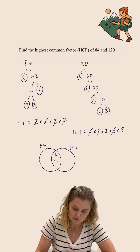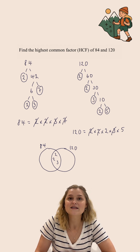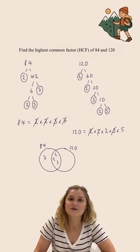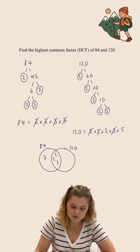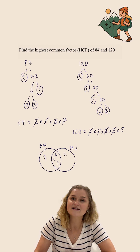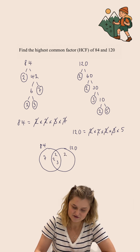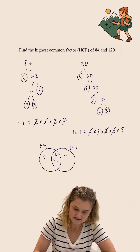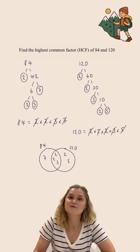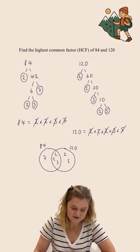I then have a 7 in 84. There are no 7s in the prime factorisation of 120, so that one just goes in the 84 circle. Moving over to 120, I have a 2 which wasn't in 84, so that just goes in the 120 circle, and I have a 5 in 120 that wasn't in 84, so that just goes in that circle.